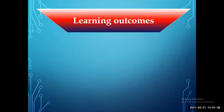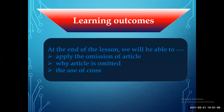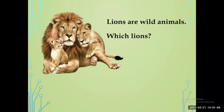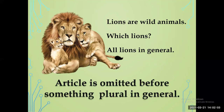These are the learning outcomes. The learner will be able to apply the omission of article — why an article is omitted, and the use of cross where article is not needed. Now Rule 1: look at the screen — 'Lions are wild animals.' Which lions? All lions in general. So the rule is: article is omitted before plural nouns used in general. If you find a noun in general, article must be omitted.